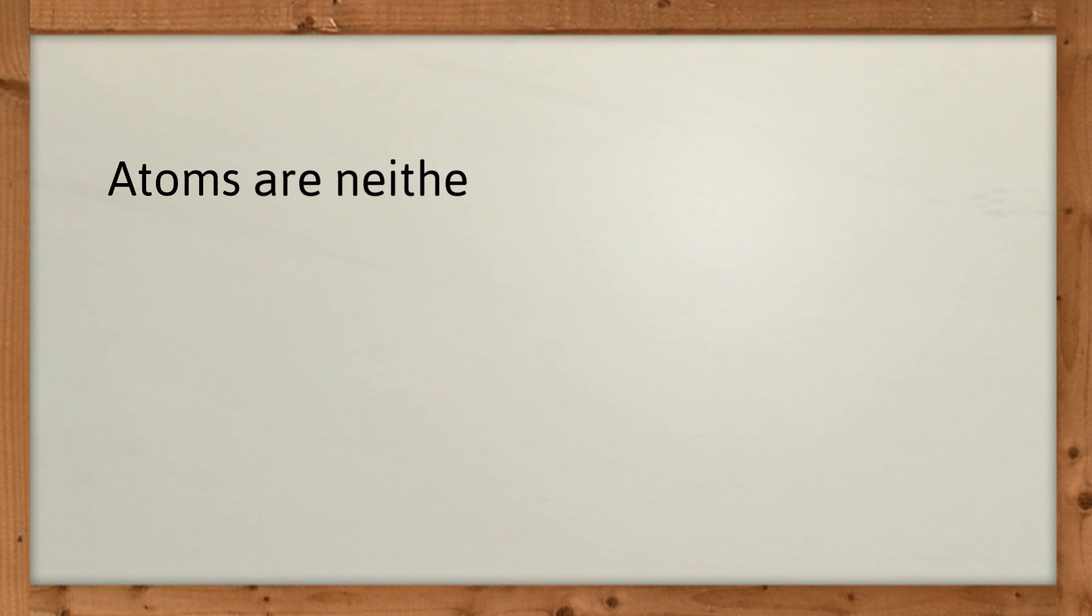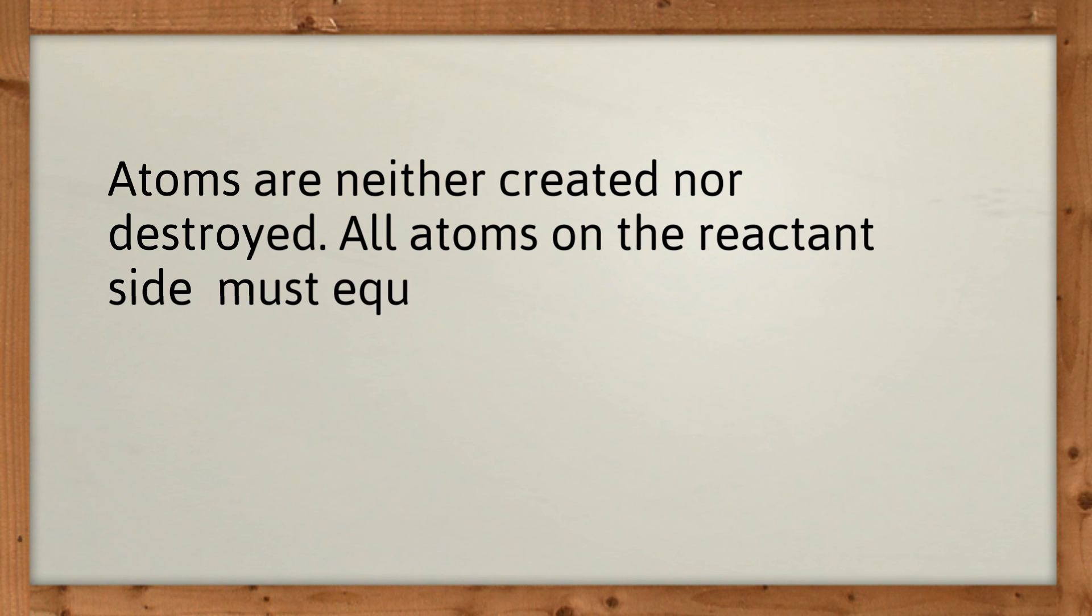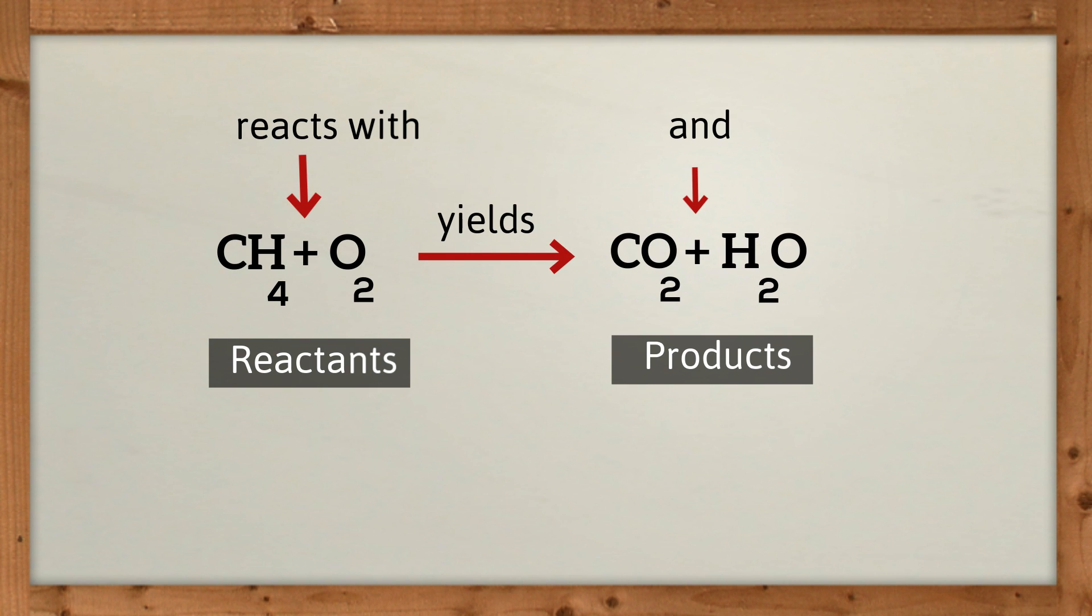Atoms are neither created nor destroyed. All of the atoms on the reactant side must equal the atoms on the product side. In other words, it must be balanced. If you count the atoms with this reaction, you will notice that it is not balanced.